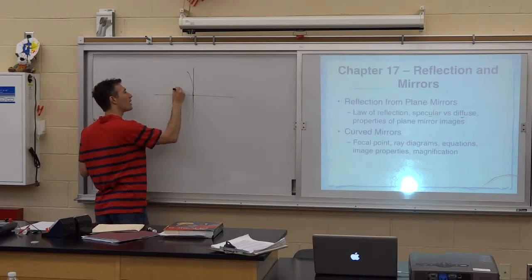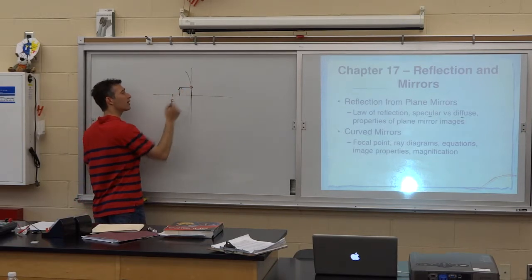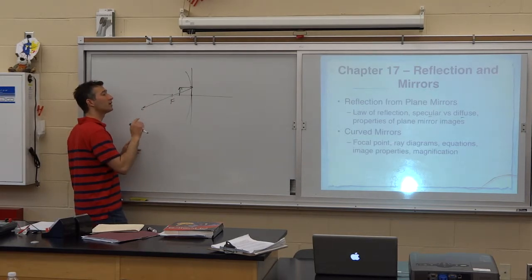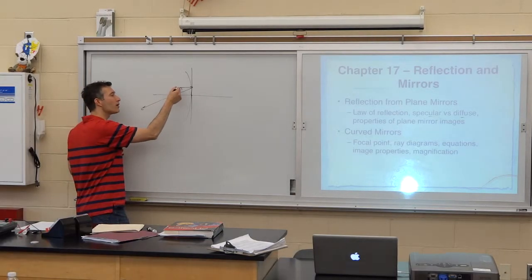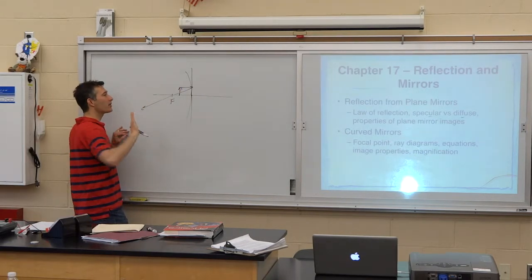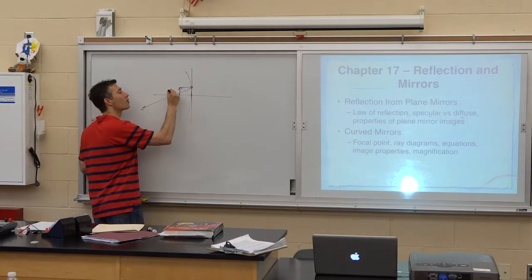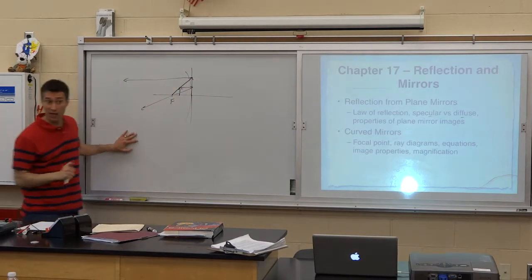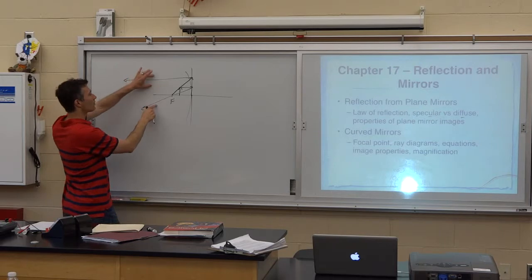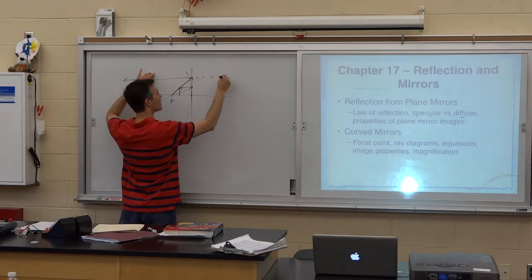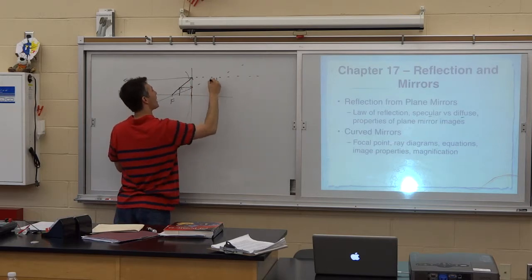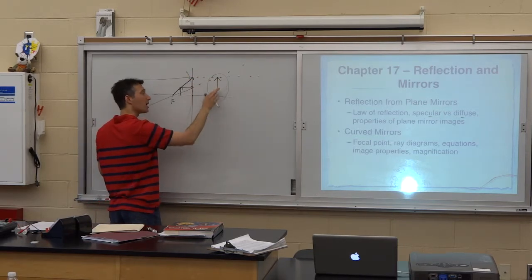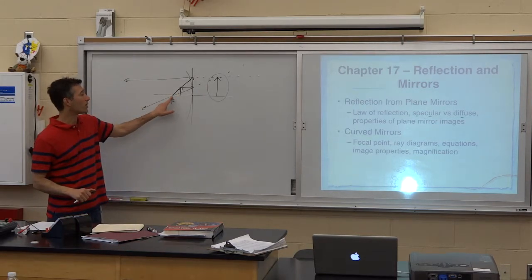Here's the focal point, with our object very close. Ray one still goes parallel to the principal axis and reflects through the focal point. Ray two is difficult because we're supposed to go through the focal point on the way to the mirror, but we can't. The way we get around that — I think it was Holly who came up with it — is to start at the focal point, go across the top of the object until we hit the principal plane, and then reflect parallel to the principal axis. Those two reflected rays do not intersect, so we have to extend them to the virtual side of the mirror. We always get an image that is virtual, erect, and larger than the object, any time the object is between the focal point and the mirror.